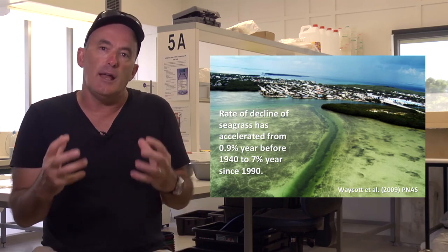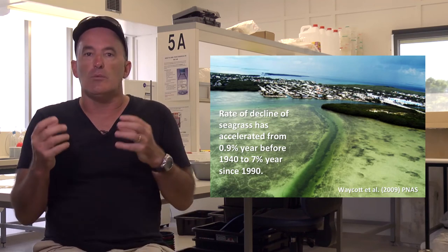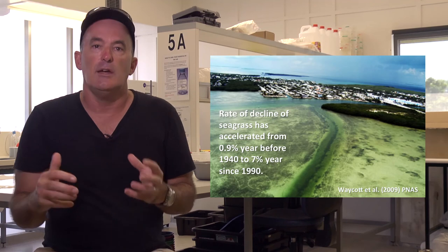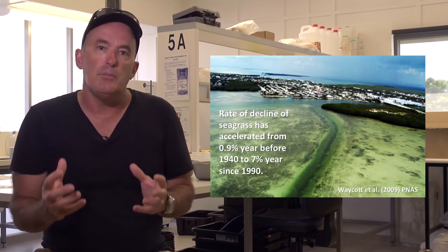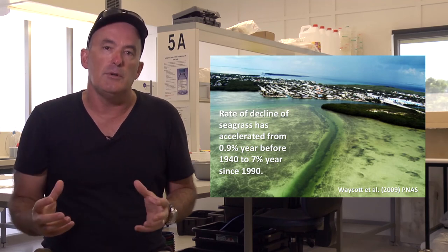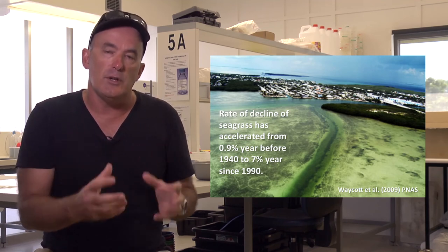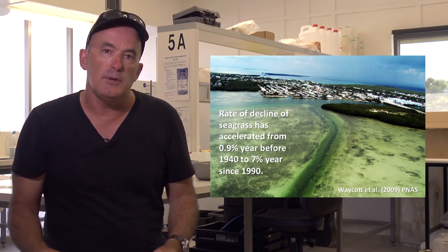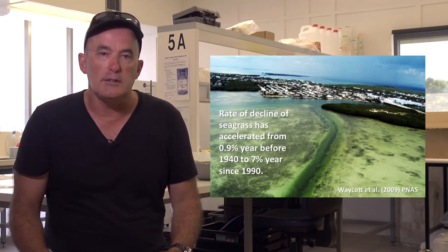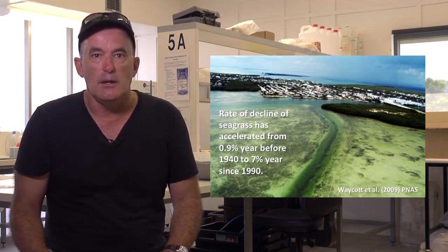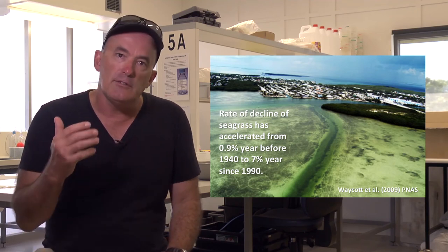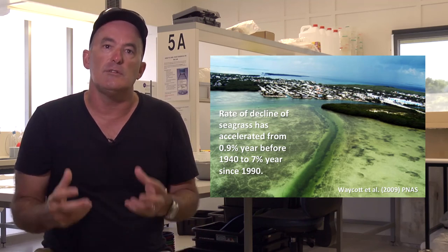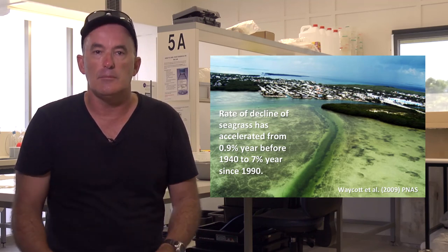A recent analysis has shown that the rate of decline of seagrasses has accelerated from 0.9% per year before 1940 to 7% per year since 1990. This places seagrass meadows as one of the most threatened ecosystems in the ocean.